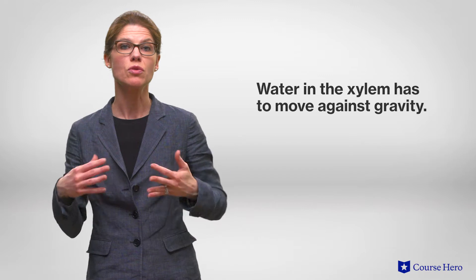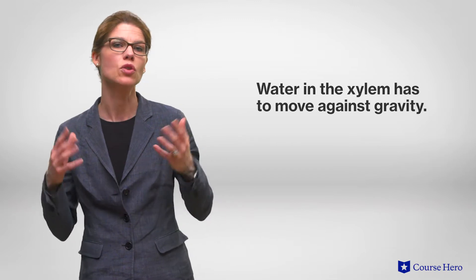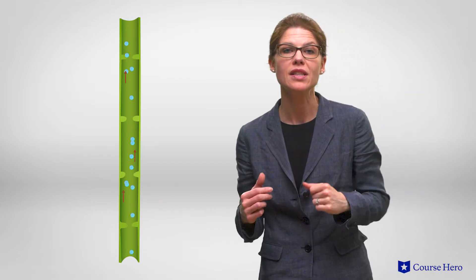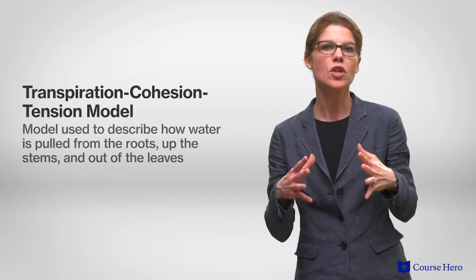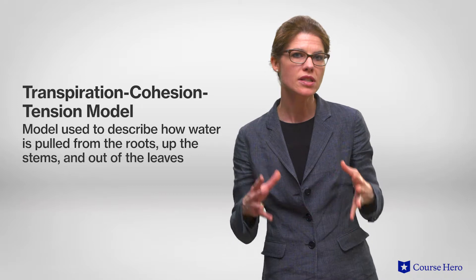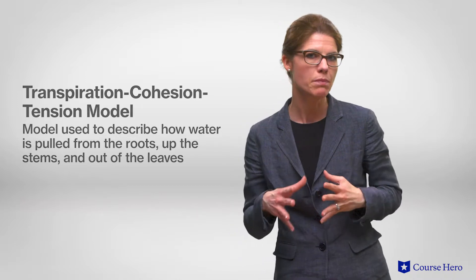The largest issue facing moving water in the xylem is that the water has to move against gravity. Scientists have developed a model that shows how water is able to move from the soil into the roots, up the stem, and to the leaves. This model is called the transpiration-cohesion-tension model, and it consists of three main parts.